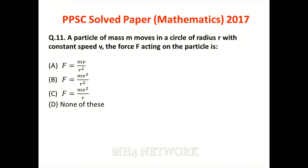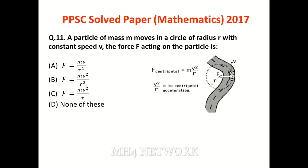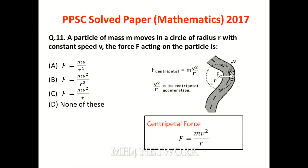A particle of mass M moves in a circle of radius R with constant speed V — the force F acting on the particle. Circle mein move karne wali force centripetal force kehlati hai. Centripetal force ka formula: F = m * v² / r. Option C is the correct answer.